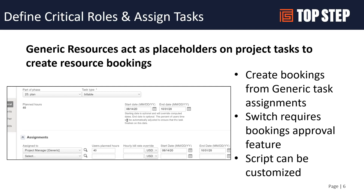One thing to note: this only works for generics. So if you were to swap out your project manager for a named resource on your proposed project plan because you know who your PM is going to be, and you use that create option, it will ignore the named resource and only create bookings for the generics. The idea from OpenAir is that you have your project plan with the resource types, amount of effort, and dates, and now you can go ahead and create requests to your resource team in an automated fashion.